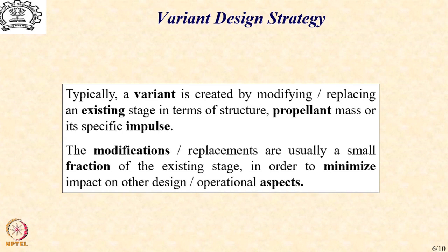These modifications or replacements are usually a small fraction of the existing stage. The implication is that in order to minimize the impact on other design and operational aspects, we need to keep these changes small. If there is a need to make large changes, then it would be better to design a new rocket itself — for example, as was done with the concept of GSLV, which is a different rocket altogether.